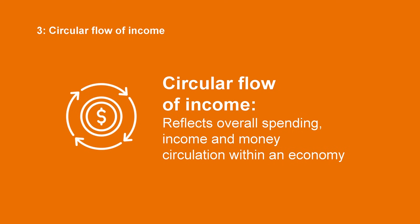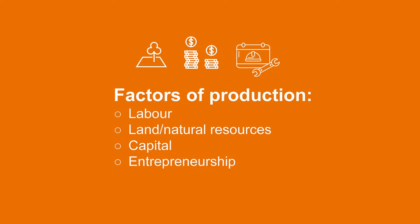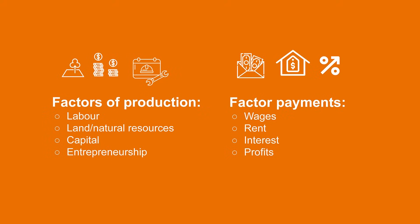The circular flow of income reflects overall spending, income and how money circulates in an economy. The factors of production are the inputs used in most production processes. This involves labor, the use of land or natural resources, capital, which is the investment, and entrepreneurship, which stands for the risk-taking activity of setting up a business. Each one of these factors has its own retribution: labor is retributed in wages, natural resources in rent, capital in interest, and entrepreneurship in profits.